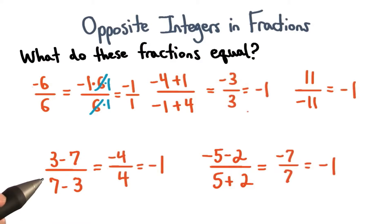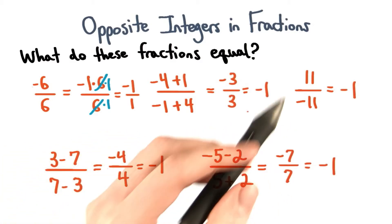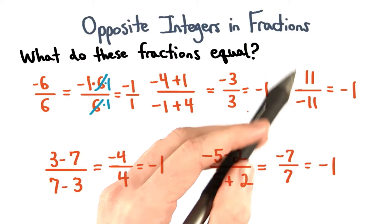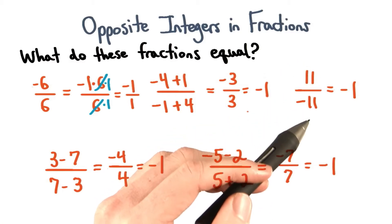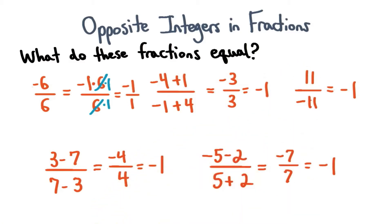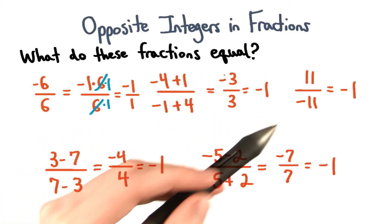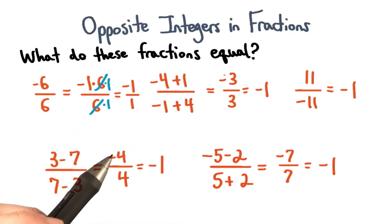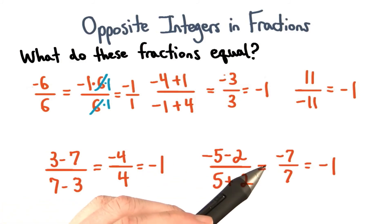We can use the same reasoning for the rest of the examples. They'll all equal negative 1, since we'll have one factor that's positive in the numerator and one factor that's negative in the denominator. It doesn't matter where the negative sign falls — we just need one of them to be negative in order for our answer to be negative 1.